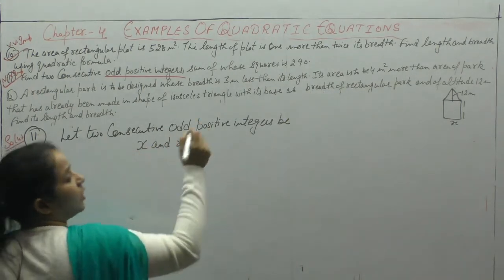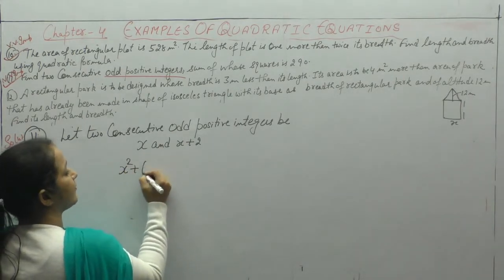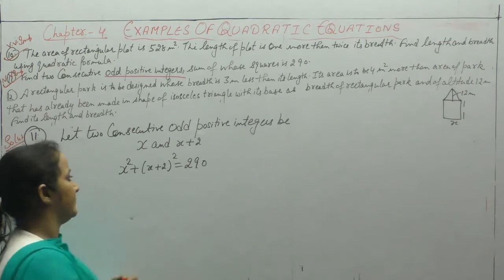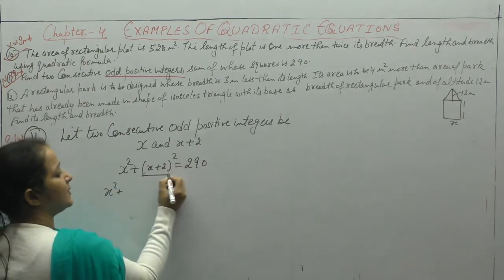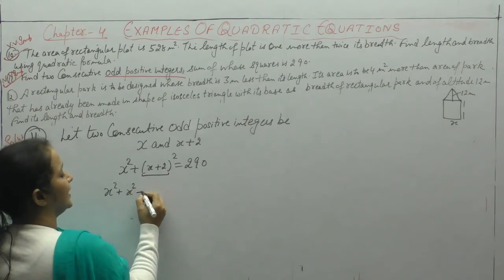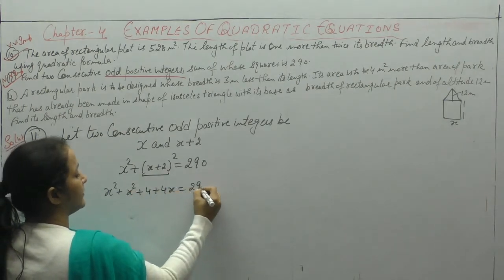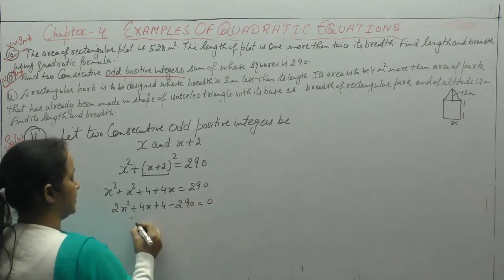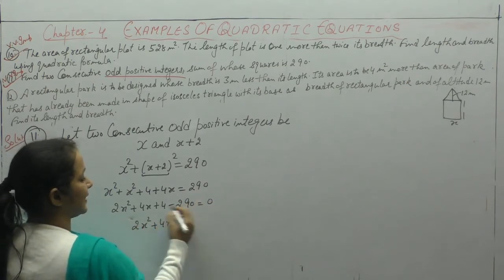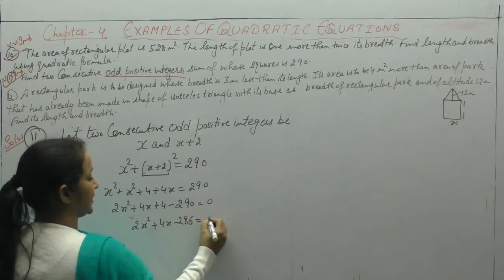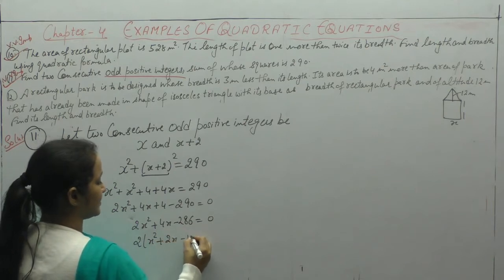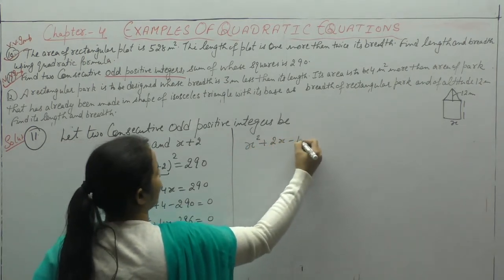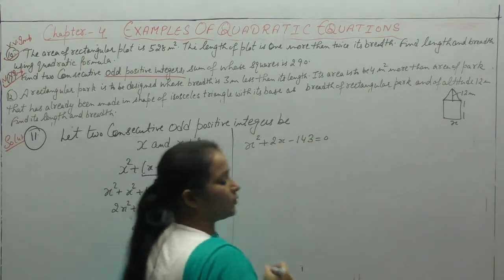Now, sum of their squares equals 290. Using the identity (a+b)² = a²+b²+2ab, we expand: x² + (x+2)² = 290, giving 2x² + 4x + 4 = 290. So 2x² + 4x − 286 = 0. Taking 2 common: x² + 2x − 143 = 0.